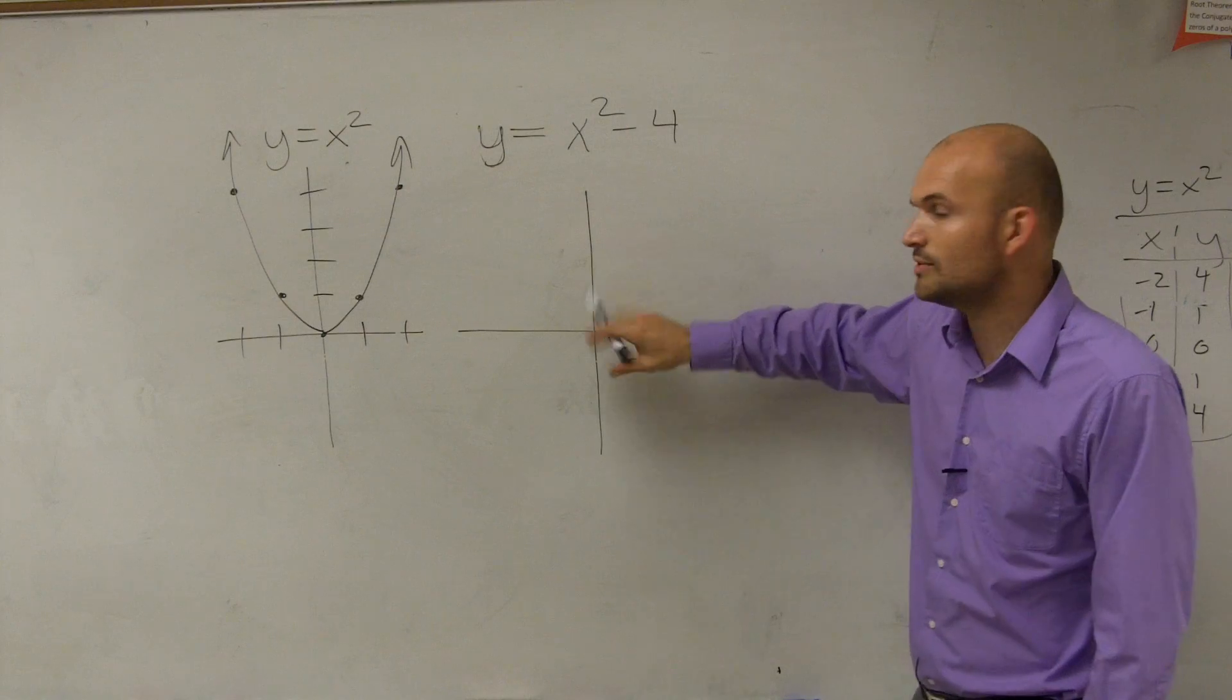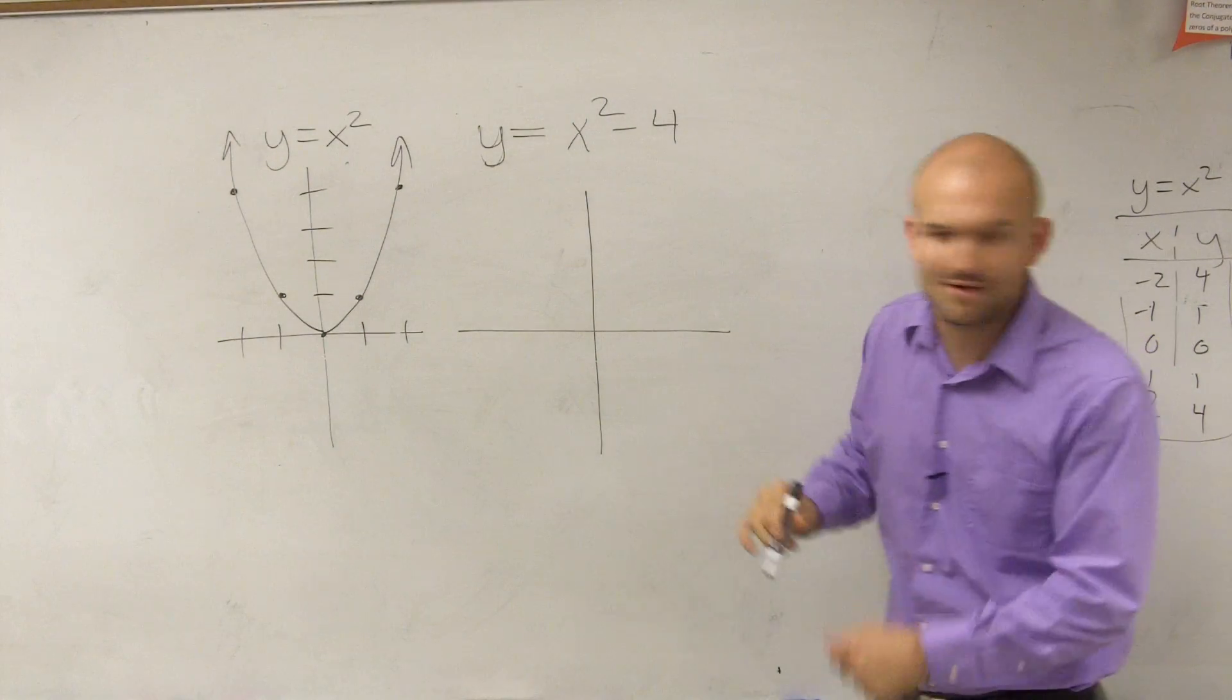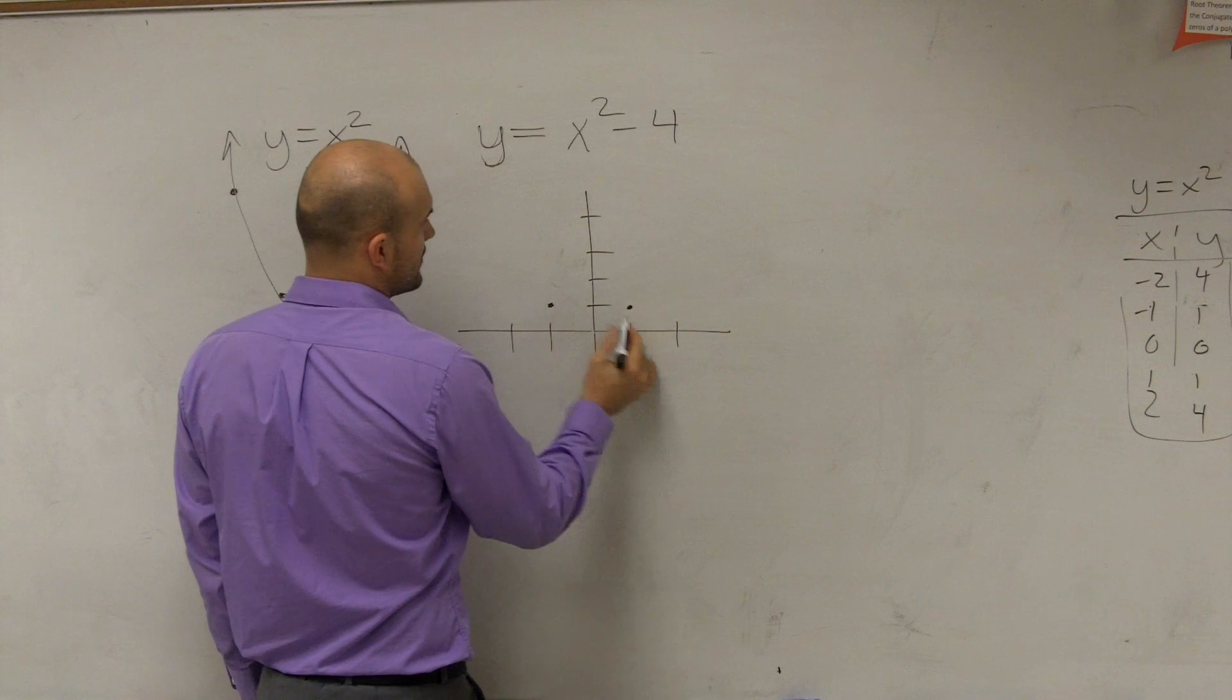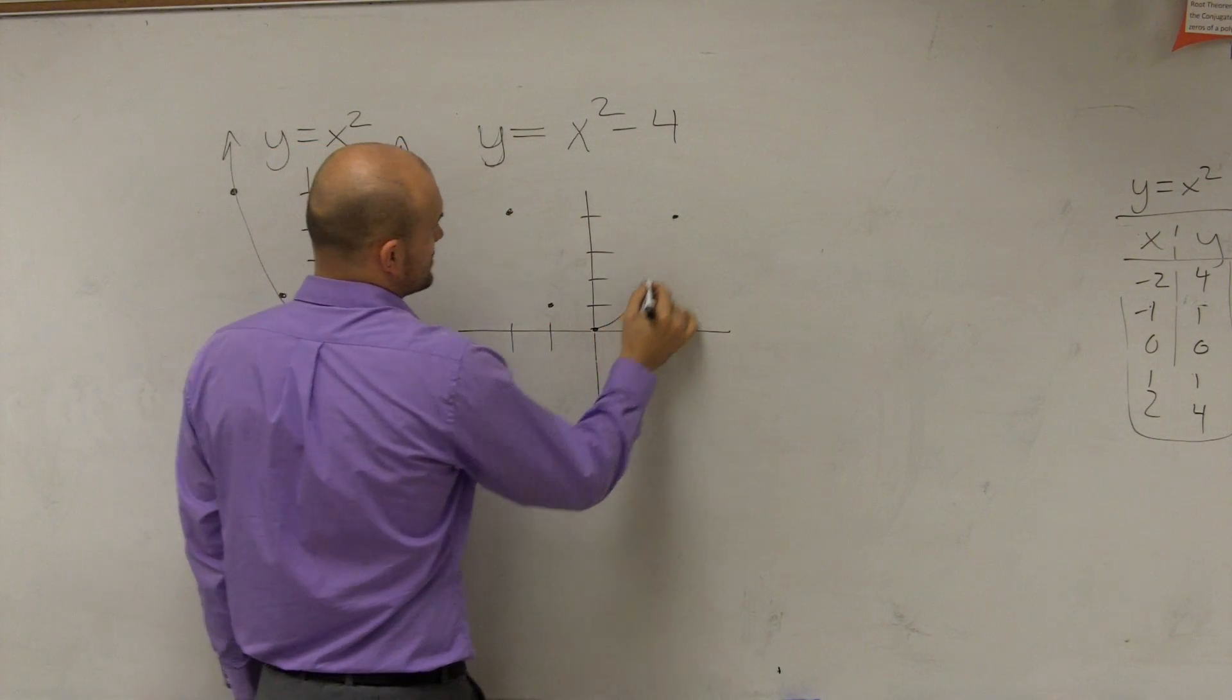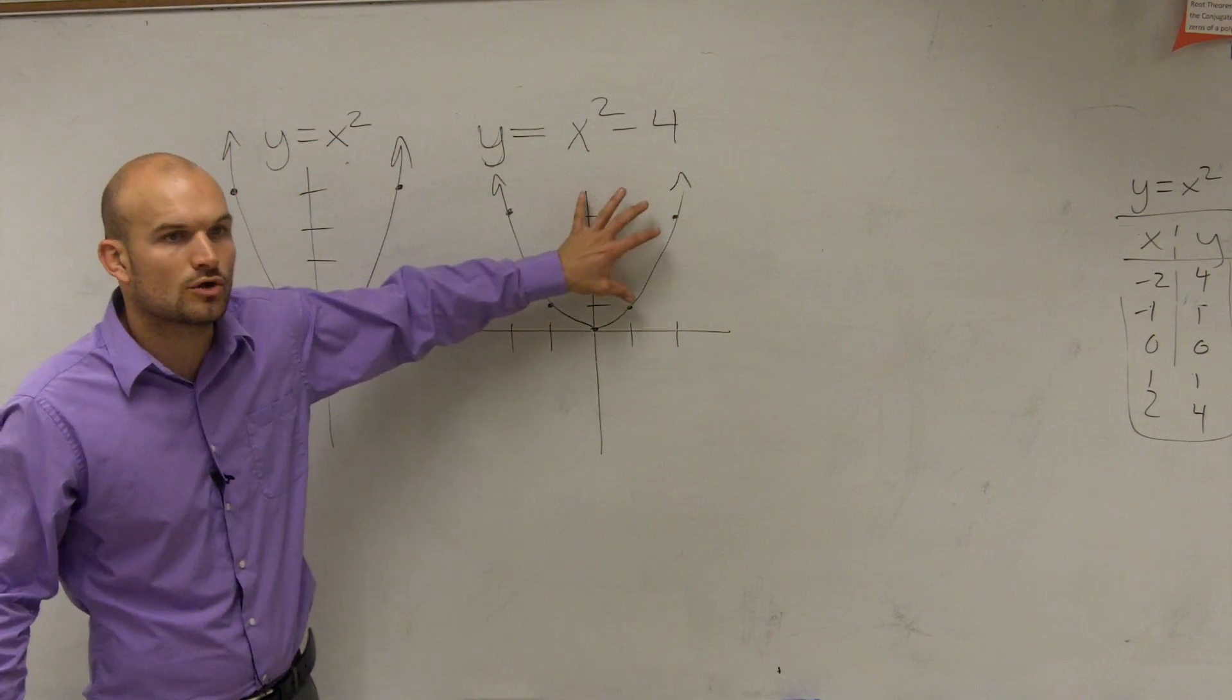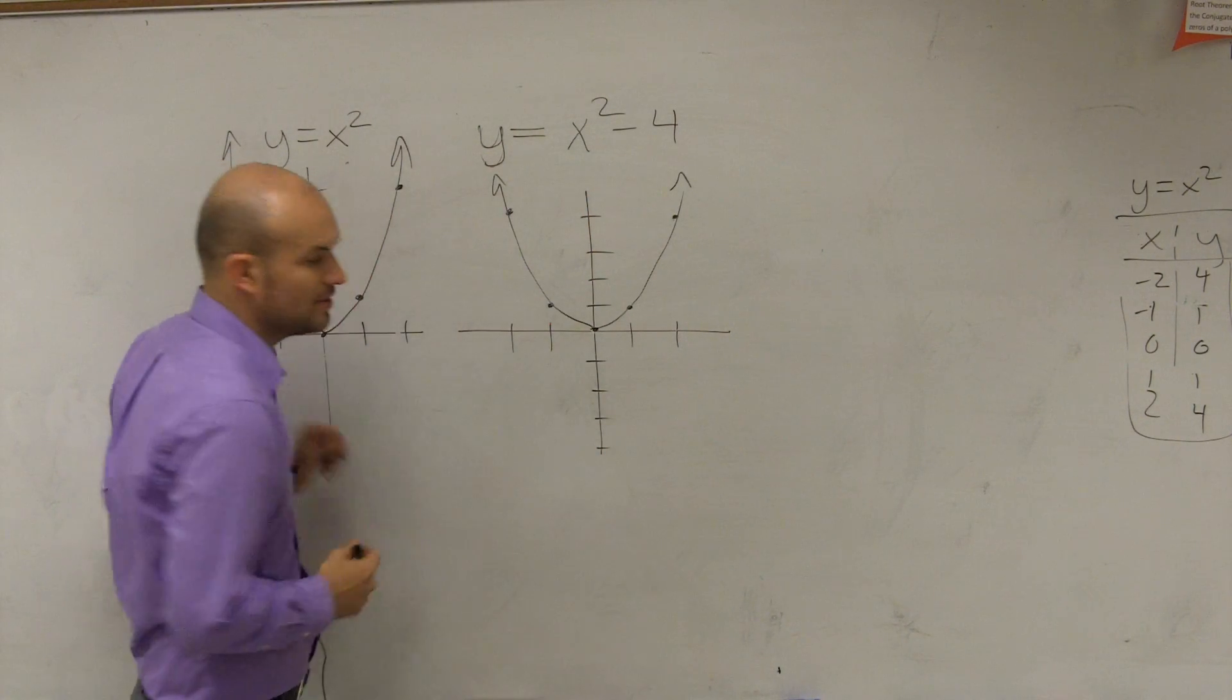So simply what I'm going to do is I'm going to recreate my parent graph and now just move the whole graph down 4. So I go 1, 2, 1, 2, 1, 2, 3, 4. So what you're going to do is you re-graph your parent graph. I think it's sometimes helpful just to kind of re-draw the parent graph. So that's the parent graph. All I'm doing is I'm taking this whole graph and shifting it down 1, 2, 3, 4 units.